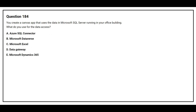Question number 184. You create a canvas app that uses the data in Microsoft SQL Server running in your office building. What do you use for the data access? Option A: Azure SQL Connector. Option B: Microsoft Dataverse. Option C: Microsoft Excel. Option D: Data Gateway. Option E: Microsoft Dynamics 365.